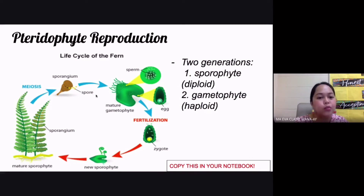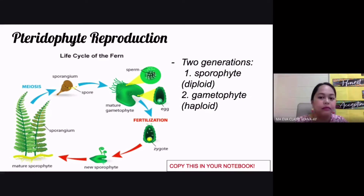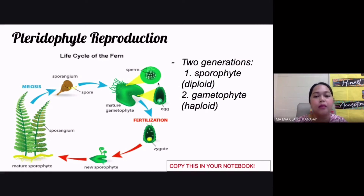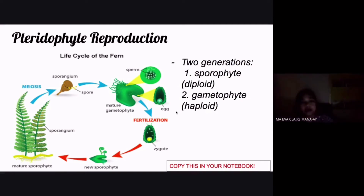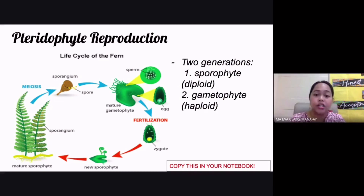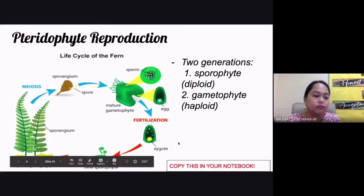The spores give rise to sperm cells and egg cells of the plant. Once sperm and egg cells are formed, we enter the gametophyte stage, because these are haploid gametes containing only half the genetic material. The sperm then fertilizes the egg in a process called fertilization, producing a zygote.